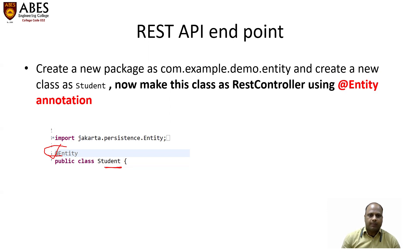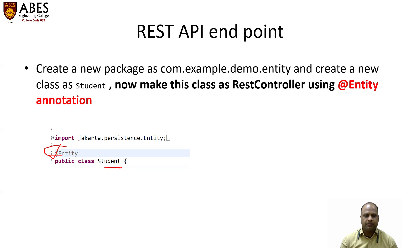To do this type of work, we need to use a special annotation to identify to the compiler which class is being used as an entity in the project. If you want to add the Student class as the entity class in your project, you need to use the @Entity annotation. Here I'm showing a sample code — using the @Entity annotation and declaring the Student class, so it will work as an entity class in my project.